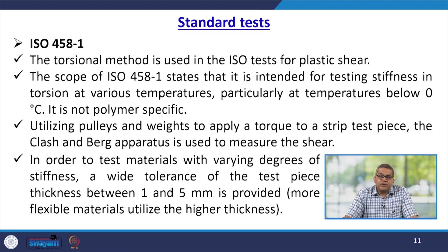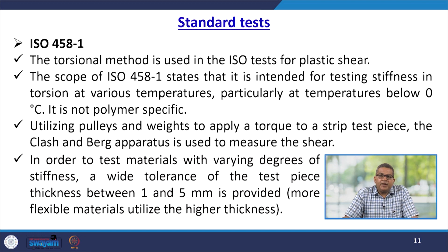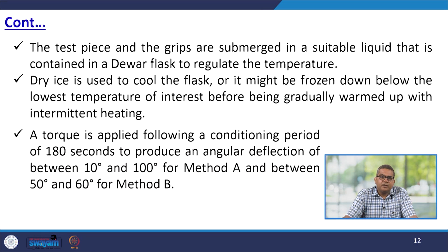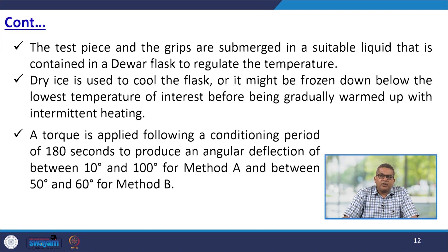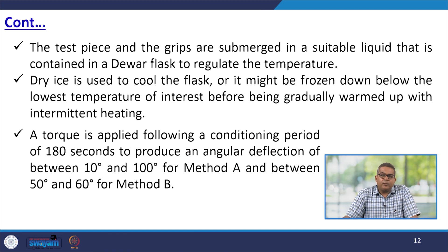Utilizing pulley and weights to apply a torque to a strip test piece, the Clash and Berg apparatus is used to measure the shear. In order to test materials with varying degrees of stiffness, a wide tolerance of test piece thickness between 1 and 5 mm is provided — more flexible materials utilize the higher thickness. The test piece and grips are submerged in a suitable liquid contained in a Dewar flask to regulate the temperature. Dry ice is used to cool the flask, or it might be frozen down below the lowest temperature of interest before being gradually warmed up with intermittent heating.